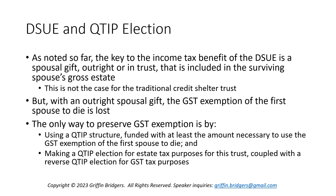We can look at this in terms of the traditional sweetheart estate plan where we leave everything outright to the spouse in a spousal gift. We get that same benefit of that second step-up in basis there through the DSUI, as we looked at in the last two parts. But the trade-off with an outright spousal gift is we don't get to preserve any GST exemption of the first spouse to die. You essentially need a trust to preserve that unused GST exemption, which cannot be preserved through the portability election itself. So if we're not going to have a credit shelter trust, you have to use a Q-tip structure funded with at least the amount necessary to fully use the GST exemption of the first spouse to die, and you also have to make both a Q-tip election for estate tax purposes and a reverse Q-tip election for GST tax purposes.